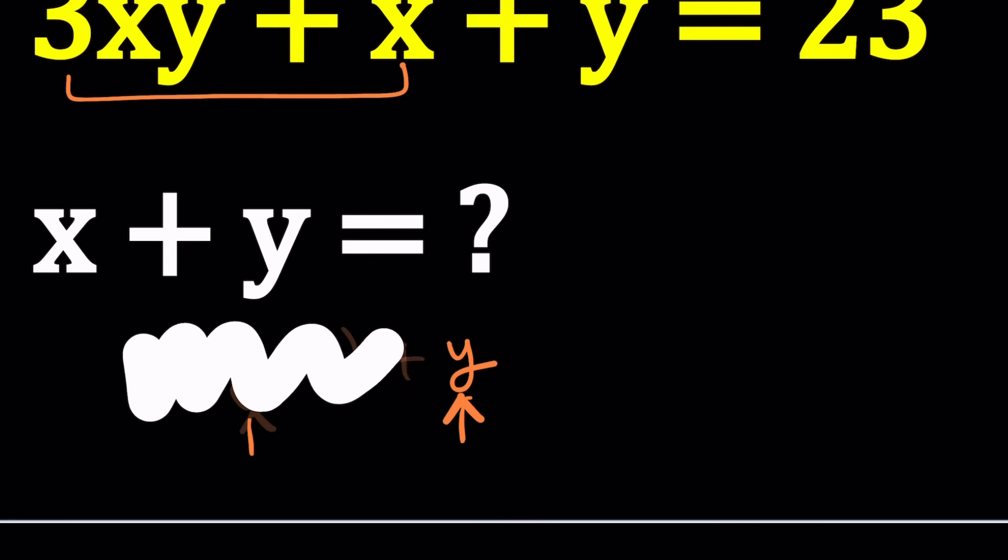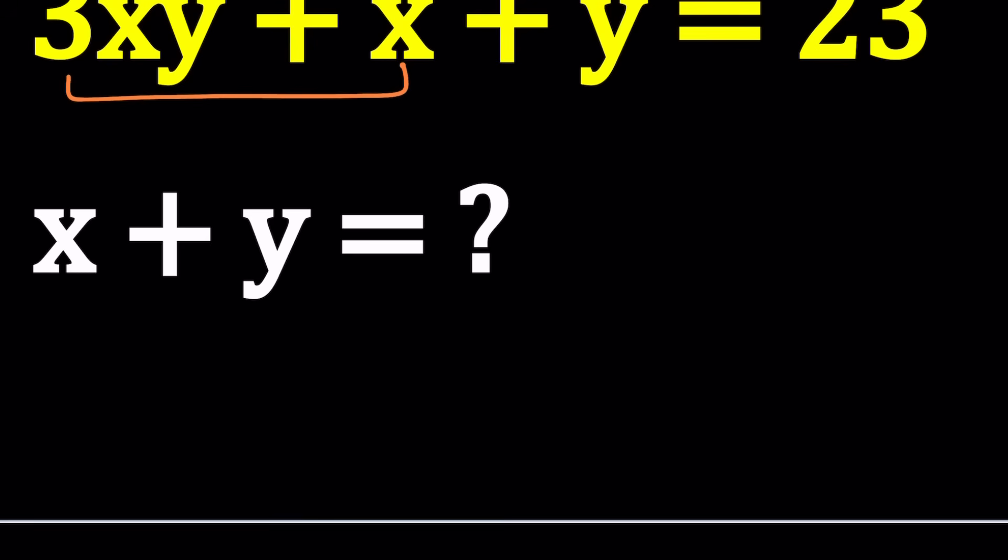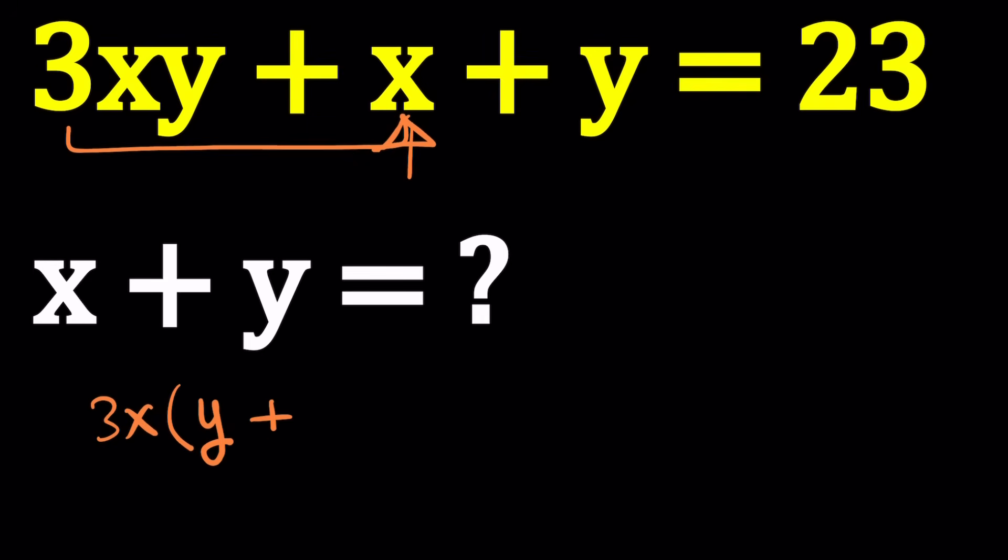We can do that by taking out 3x instead of x. I know you're probably thinking, wait a minute, 3x is not a common factor. Well, it does have it. If I take out 3x, then I get y plus 1 third. So I get a rational number, that's perfectly fine. Now notice that I have the same amount of y. The next step would be to add something to both sides so that we can get a common factor. Since y is added to 1 third, I need to add 1 third to both sides.